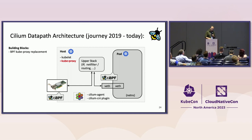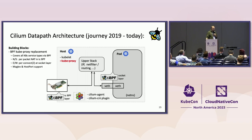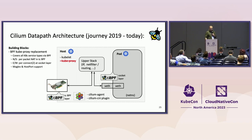Coming back to our journey initially, when we worked on Cilium in the early days, the first thing we did was replacing the kube-proxy component with a BPF-based implementation in order to be better scalable. That covers all the Kubernetes service types. For the north-south direction, we have per-packet load balancing at the TC BPF layer. The Cilium agent, when it spawns up, attaches BPF programs on the physical devices in the TC BPF layer of the stack. In east-west, we got rid of per-packet NAT and are doing backend selection at connect time. We also have NodePort and host port support.